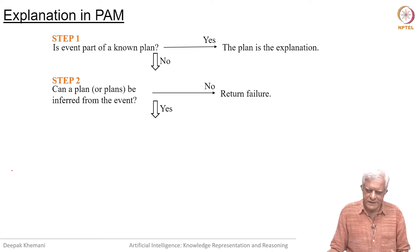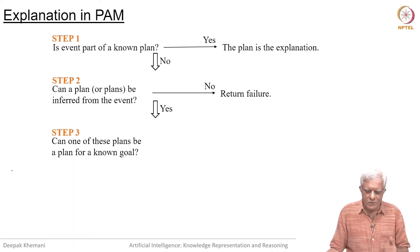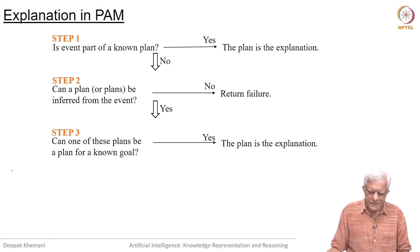If yes, then you infer one of the possible plans. Can one of these plans be a plan for the known goal? If that is the case, then the plan is an explanation.